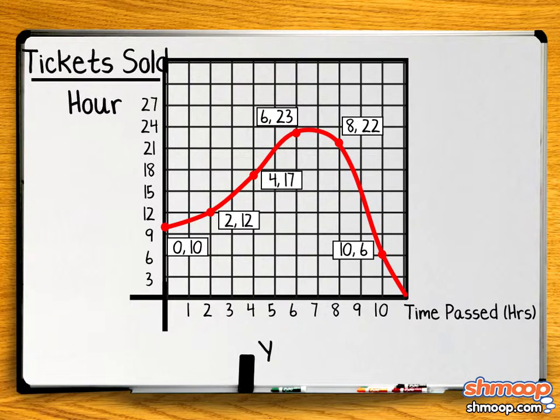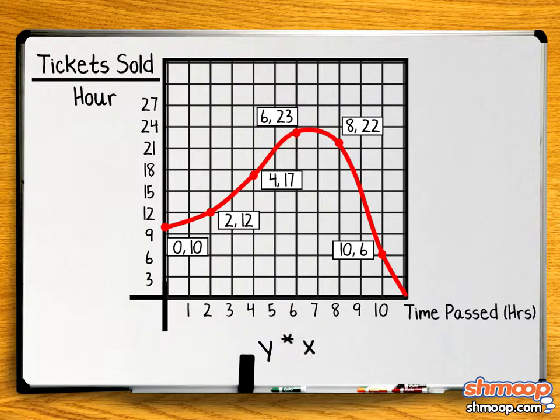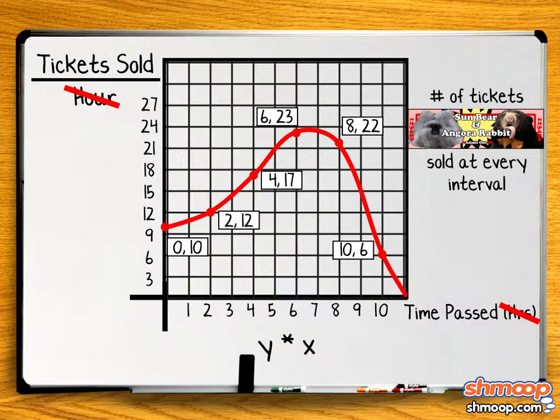If we multiply y, the tickets sold over time, by x, or time, hours cancel out, so we get the number of tickets sold at every interval. This is the same as multiplying the y-value of a point on the curve by the relevant interval on the x-axis. If we add up all the intervals, we get the area under the curve.